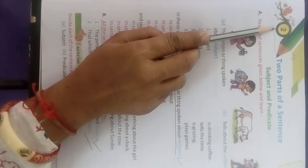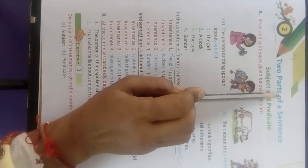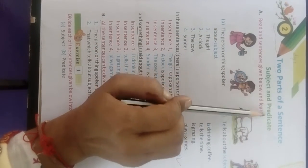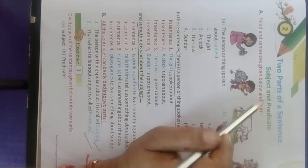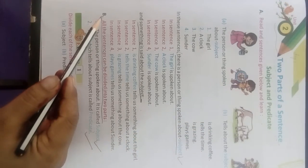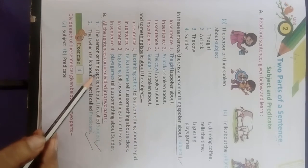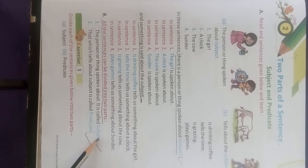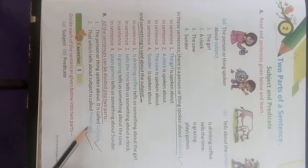You need to mention in your grammar notebook the title: 'Two Parts of a Sentence — Subject and Predicate.' Write point B: All sentences can be divided into two parts. First, the person or thing spoken about is called the subject; second, that which tells us about the subject is called the predicate.